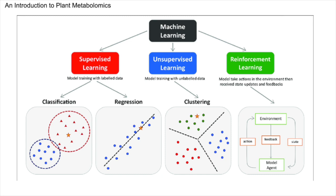As illustrated by these examples, the fusion of machine learning with metabolomic analyses yields substantial advancements. Employing a variety of algorithms ranging from basic linear regression to sophisticated deep learning models facilitates the handling of extensive metabolomic datasets and the precise prediction of post-harvest changes in plants. This predictive ability allows for timely interventions to maintain nutritional quality and prolong the storage life of agricultural produce.